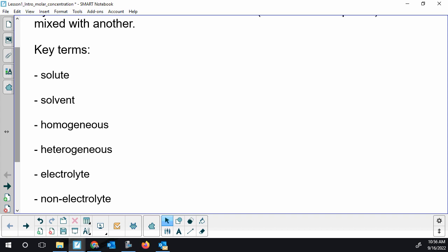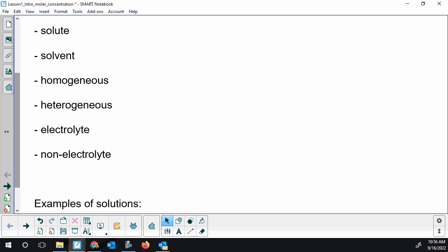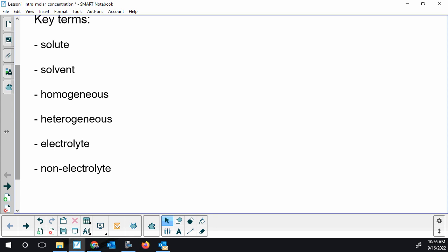Now, solute is a key term that I want to see what you can remember. Solvent, we can have a homogeneous solution or a heterogeneous solution. So we're going to recap that. Electrolytes and non-electrolytes. So think about these, make notes, and we'll recap them shortly.